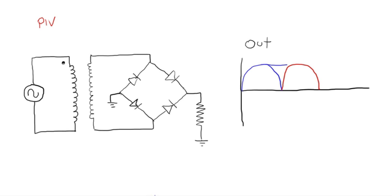In this circuit, peak inverse voltage, well, if we were to look at it when, let's say, this was positive and this was negative, we know that this diode here was forward bias, or letting current flow.